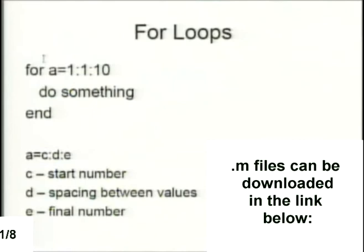These are the basic greater than, less than, less than or equal to, and greater than or equal to — that's the syntax. For loops go: for A equal to 1 through 10, separating by 1, do something, and then end. C is the start number, D is the spacing between values, and E is the final number, so you can go as you please with that type of command.